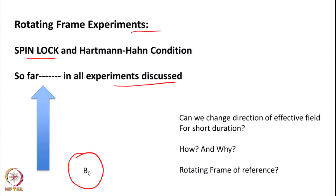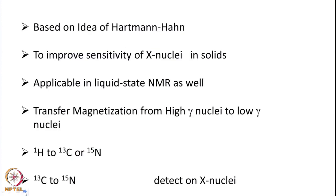Now, can we change the effective field direction for a short duration? The benefit of changing the effective field direction — this idea is based on something called Hartmann-Hahn. These are two scientists who conceptualized and proposed this idea. What we are trying to do is transform from the lab frame to the rotating frame of reference by changing the direction of the effective field for a short duration.